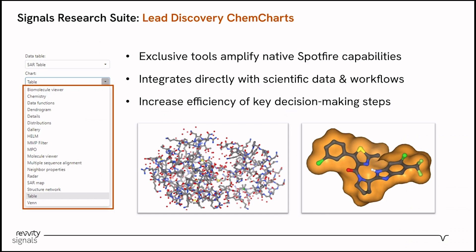What we have at our disposal are the lead discovery chem charts that are part of Signals Research Suite. These are a comprehensive set of visualizations and advanced calculations that amplify and augment what's already available natively in Spotfire. What's really key is that these chem charts are built with scientific use cases in mind. There are a few of them that are really tailored towards either small molecules or biopolymers and biosequences, but the vast majority work nicely across the wide range of molecule sizes and complexity that you might be working with.